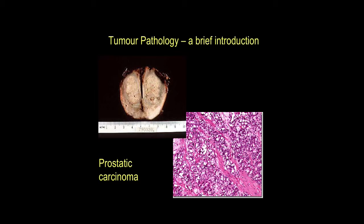Here's another example of an adenocarcinoma, a glandular epithelial malignancy. This time we're dealing with a prostate gland. In the macroscopic photograph, we see a prostate in which there's this irregular nodularity with quite pale yellow cream nodules, which are replacing the gland.